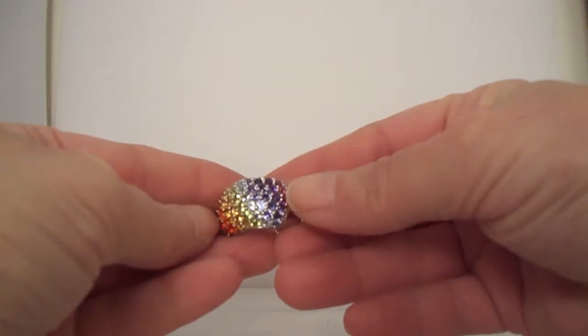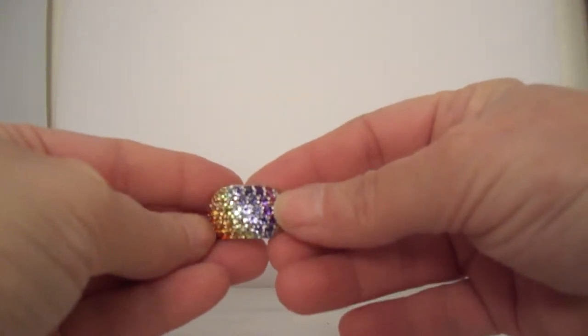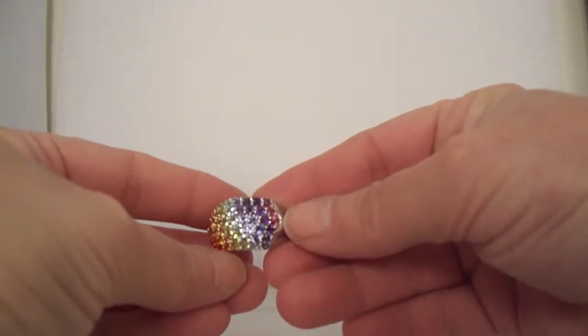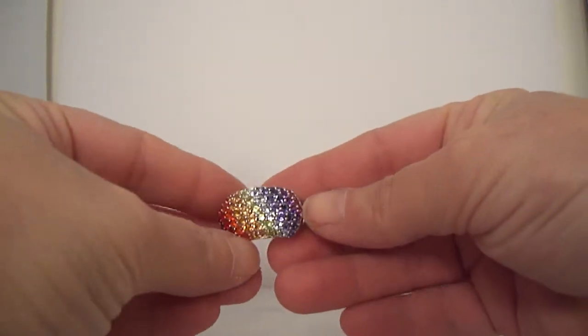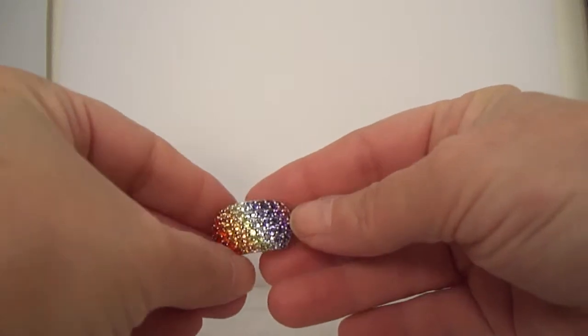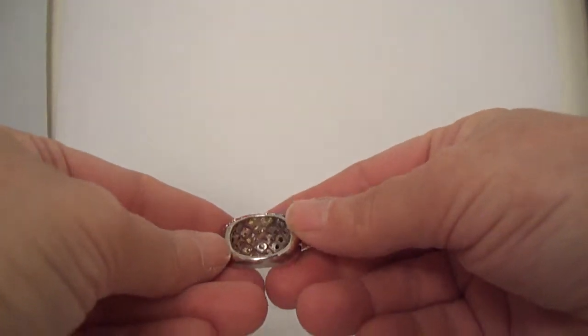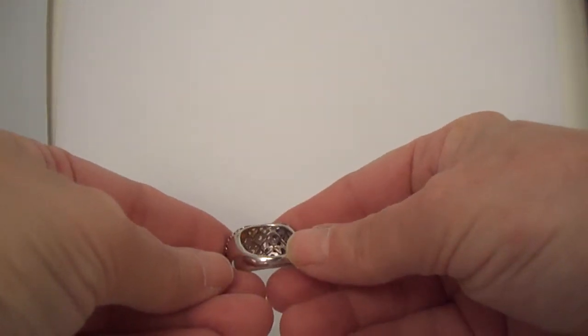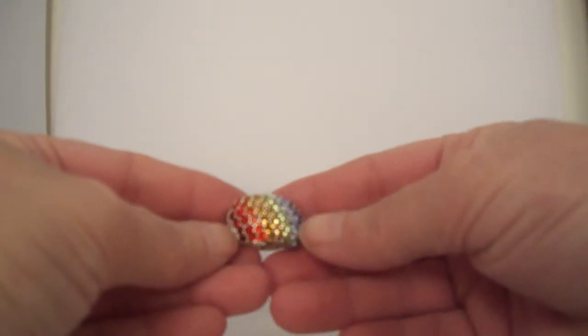...garnet, fire opal, iolite - it's just got a whole bunch of stones in there to give you that rainbow look. And it's nice and sparkly because it's got small rounds; that's what makes it so sparkly. It's got a comfort fit design. This is a size 7.